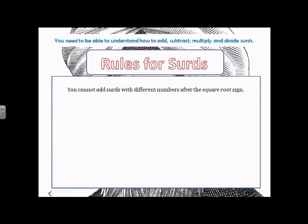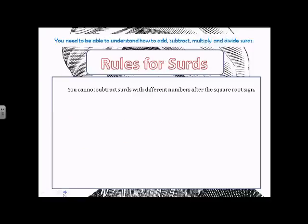You cannot add surds with different numbers after the square root sign. So if you had root 7 adding root 5, you can't do that. That's a big no. And the same goes for subtraction either.